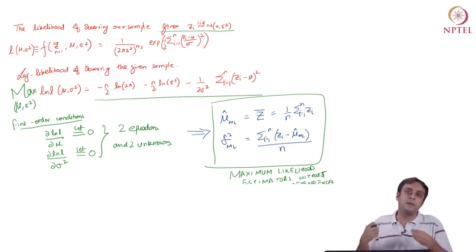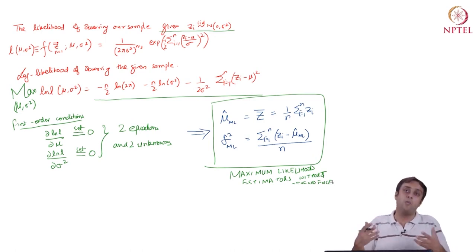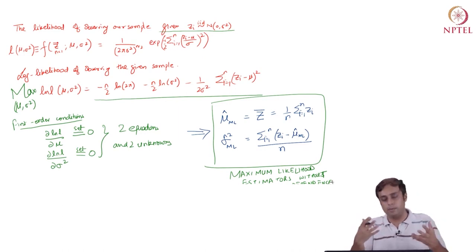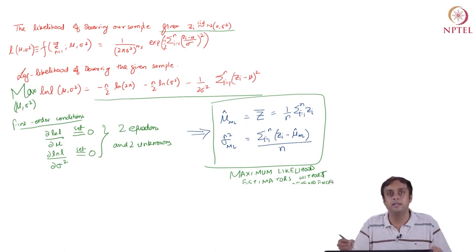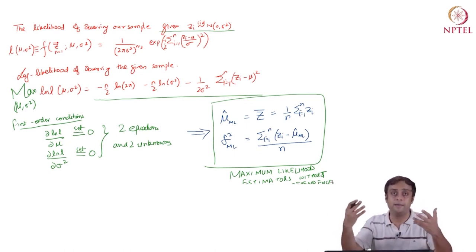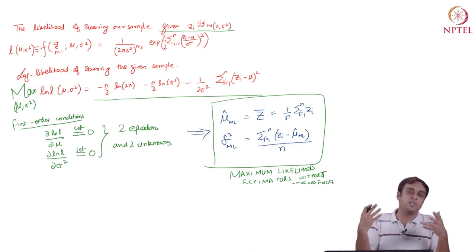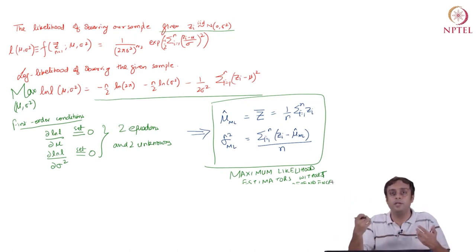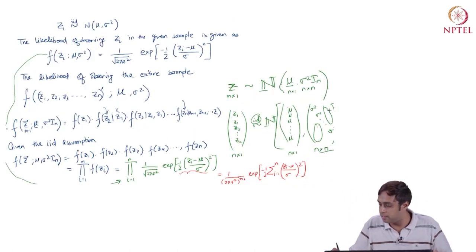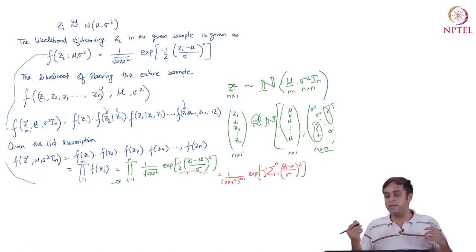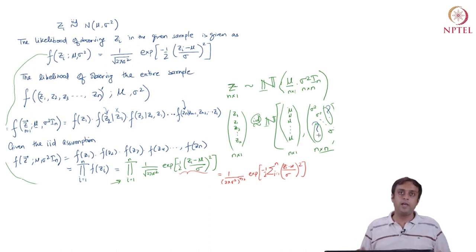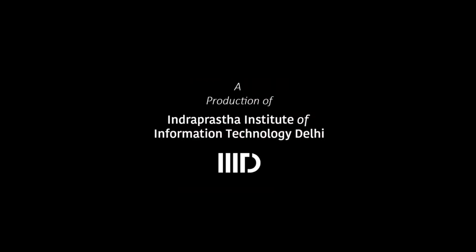As the next natural step, we are going to add spatial dependence to the data and see how the parameter estimates change. Clearly, the first thing that will happen is that the variance-covariance matrix will no longer be σ²Iₙ — it will be more complicated because the off-diagonal elements will be non-zero. The first change is at the off-diagonal elements of the variance-covariance matrix of the vector z.